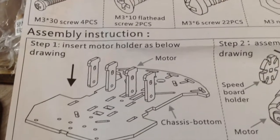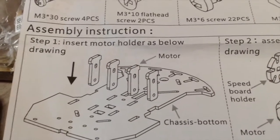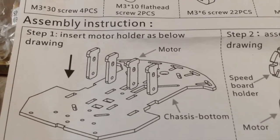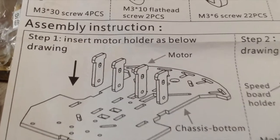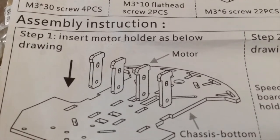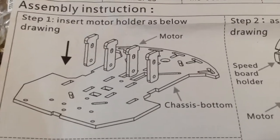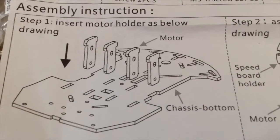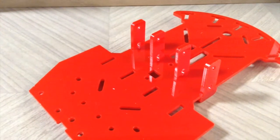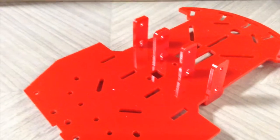Now to assemble the robot we're just going to follow the instructions. We're going to follow step one which says insert motor holder as this drawing shows. So that's what we're going to do. So this is what the chassis looks like after step one is completed.